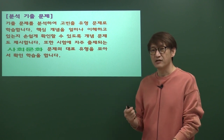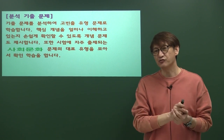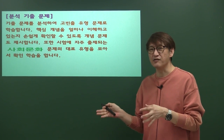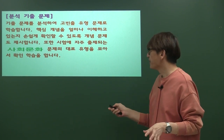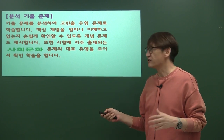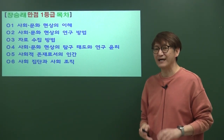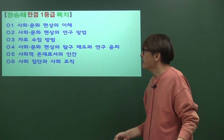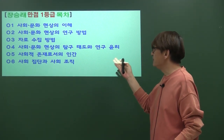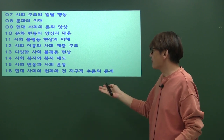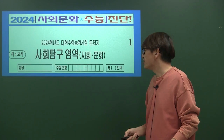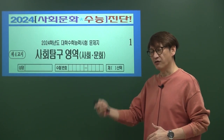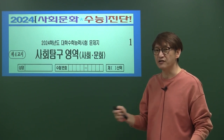본 강좌에서는 작년도 수능 문제를 분석해 어떤 원리와 핵심 개념들이 문제에 투영됐는지 중점적으로 살필 것입니다. 대표적인 출제 문항들을 살펴 각각의 핵심 개념이 어떤 식으로 출제되는지 분석하겠습니다. 목차는 사회문화 현상 2강에서부터 16강 현대사회의 변화와 전 지구적 수준 문제까지 구성되어 있으며, 각 챕터가 어떤 식으로 지문에서 발췌되는지 살펴보겠습니다.